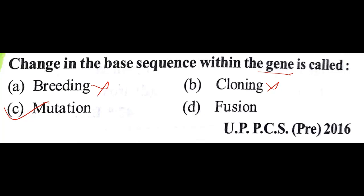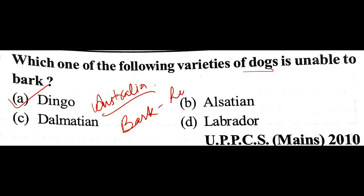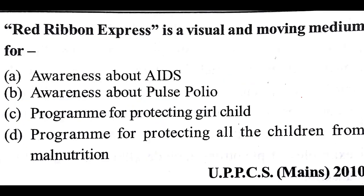Which one of the following varieties of dogs is unable to bark? The answer is A: dingo. This kind of dog is found in Australia; these dogs cannot bark but they can howl like wolves. Red Ribbon Express is a visual and moving medium for awareness about AIDS.